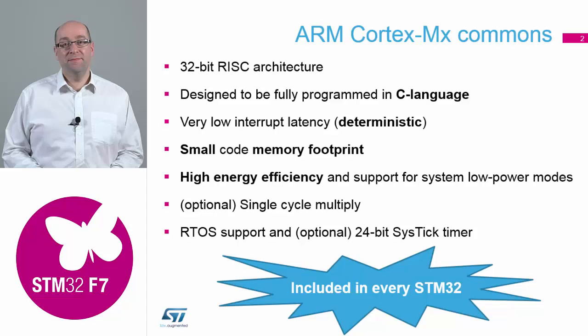Smaller code footprints were achieved by rearranging all the instruction sets from the old ARM7 and ARM9, giving you the new Thumb2 instruction set. ARM's main focus area for their products was mobile phone technology, so low power modes were fairly well embedded inside the core, with lots of different features you could enable to put the device into low power modes. They also provided optional features like single-cycle multiply and the 24-bit SysTick timer, which not every vendor chose to use.